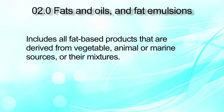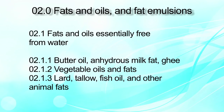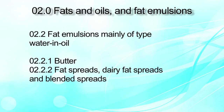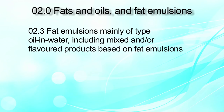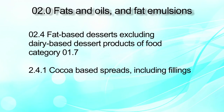Category number 2 is fats and oils and fat emulsions, which has a vast product range. It includes fat-based products derived from vegetable, animal, marine sources and their mixtures. Sub-category 2.1 describes fat and oil essentially free from water — like butter oil, anhydrous milk fat, ghee, vegetable oils and fats, lard, tallow, fish oil and other animal fats. Category 2.2 covers fat emulsions mainly of water-in-oil type, like butter, fat spread, dairy fat spread and blended spreads. Category 2.3 covers fat emulsions of oil-in-water type including mixtures and flavored products. Category 2.4 covers fat-based desserts excluding dairy-based desserts of category 1.7, for example cocoa-based spreading spreads including fillings.